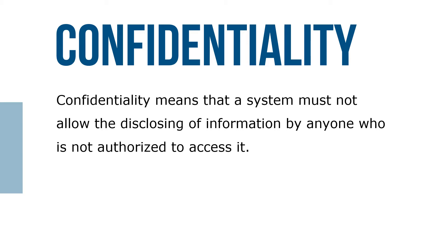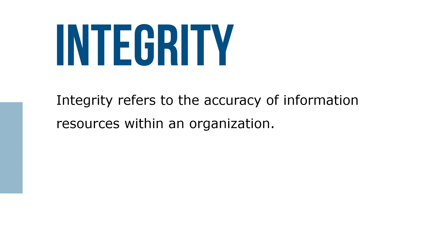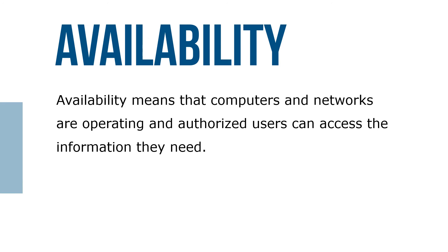Confidentiality means that a system must not allow the disclosing of information by anyone who is not authorized to access it. Integrity refers to the accuracy of information resources within the organization. Availability means that computers and networks are operating and authorized users can access the information they need.